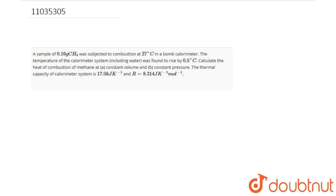This question is saying that a sample of 0.16g of CH4 was subjected to combustion at 27 degrees Celsius in a bomb calorimeter. The temperature of the calorimeter system including water was found to rise by 0.5 degrees Celsius. So we have to determine heat of combustion of methane at constant volume and at constant pressure. The thermal capacity of calorimeter is given as 17 kilojoules and R's value.